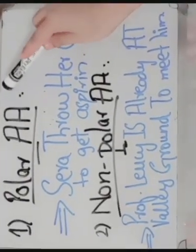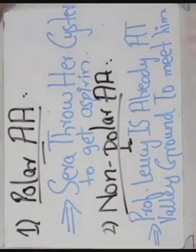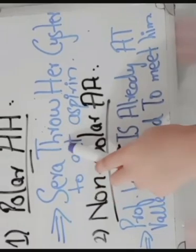On the basis of side chain, amino acids are divided into two types: polar amino acids and non-polar amino acids. To remember the polar amino acids, we have to remember the mnemonic: Sarah throw her sister to get aspirin. S for serine, T for threonine, C for cysteine, G for glycine, and A for asparagine.